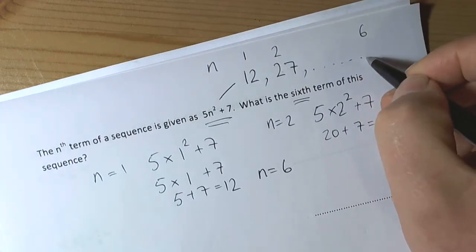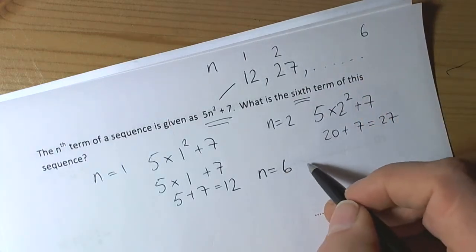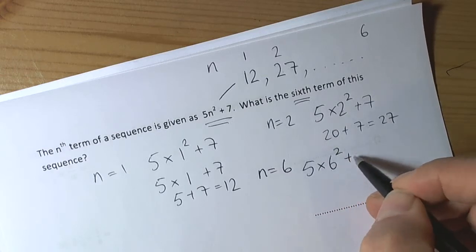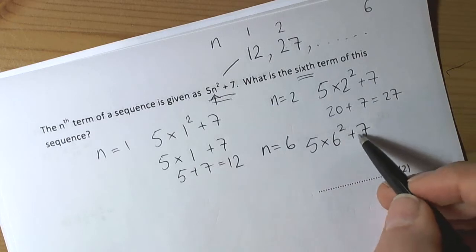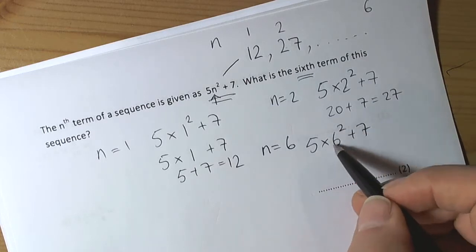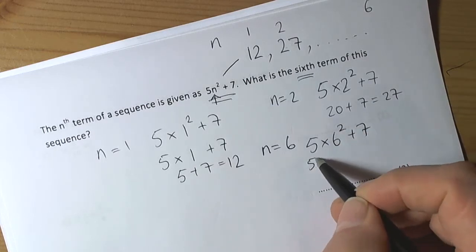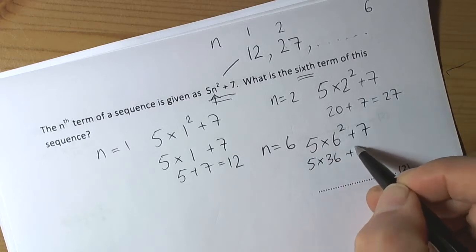Somewhere along here we have the 6th term. So when n is 6, we have to do 5 times 6 squared plus 7. Substitute again the n value with the term number. And 6 squared gets done first under BIDMAS, so that's going to be 5 times 36 plus 7.